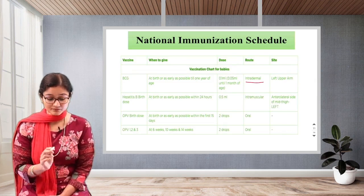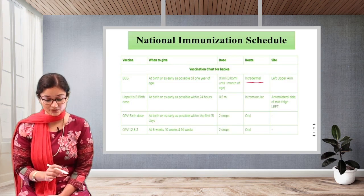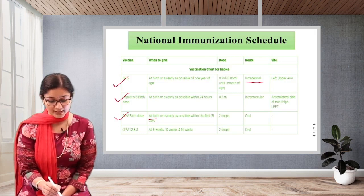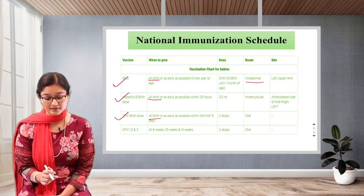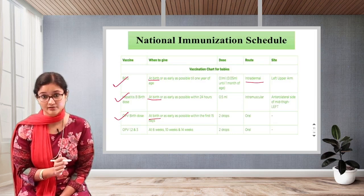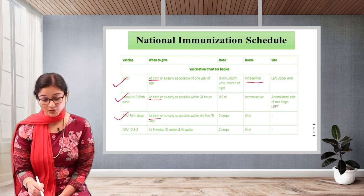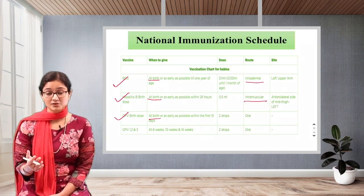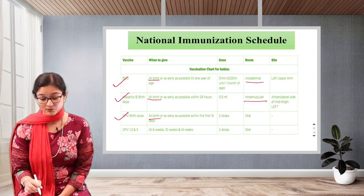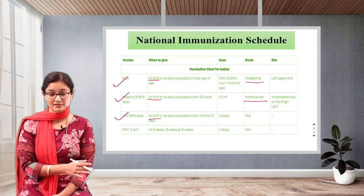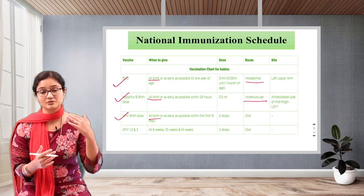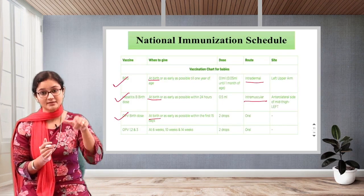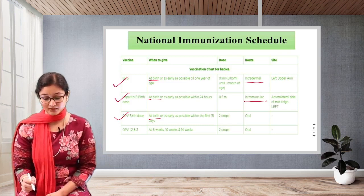Next is Hepatitis B birth dose. At birth, BCG, Hepatitis B, and OPV are all given — we say at 0. Hepatitis B is given within 24 hours as early as possible if not given at birth. It is 0.5 ml intramuscular, given at the anterolateral side of the mid-thigh on the left side. OPV is oral polio virus vaccine — two drops given orally at birth or as early as possible within the first 15 days.